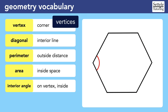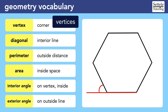An interior angle is on a vertex and opens into the shape. An exterior angle is on the outside, but you would need to continue one of the sides to form an exterior angle. You're unlikely to see this term on the SAT, but you might see an exterior angle on a picture that is already drawn for you.